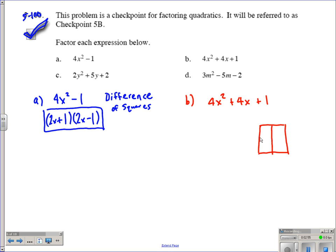So remember we make our generic rectangle and then we make our diamond which ends up really just being an X. First term bottom left corner, last term top right corner. The product of 4x squared and 1 is going to be 4x squared, that goes in the top, and our middle term goes in the bottom. So we're looking for factors of 4x squared that have a sum of 4x. In this case it's 2x and 2x. We plug those in here: 2x, 2x. So this is looking like it's a perfect square trinomial.